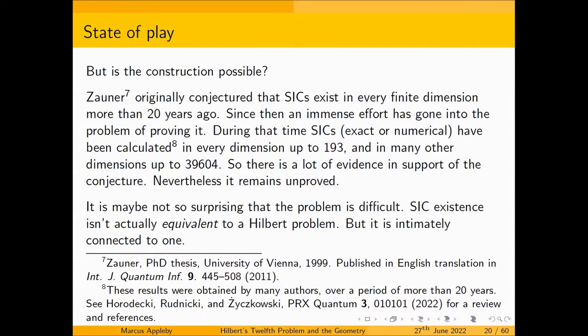Zauner originally conjectured that SICs exist in every finite dimension in the late 1990s. Since then, an immense effort has gone into proving it. During that time, SICs have been calculated in every dimension up to 193, and in many other dimensions up to 39,604. So there's a lot of reason for thinking they exist in every dimension, but it's unproven. It's maybe not so surprising the problem is difficult, because SIC existence isn't actually equivalent to a Hilbert problem but is intimately bound up with one.